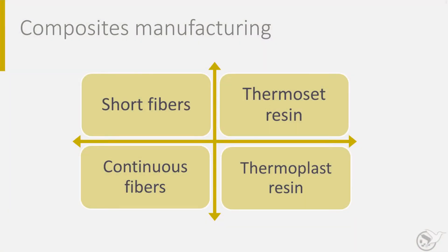Composites are materials composed of different constituents, for example fibers for strength and stiffness properties and a polymer for the load transfer, support and protection of the fibers. Due to this mixture of materials, the options for manufacturing processes are related to these ingredients.